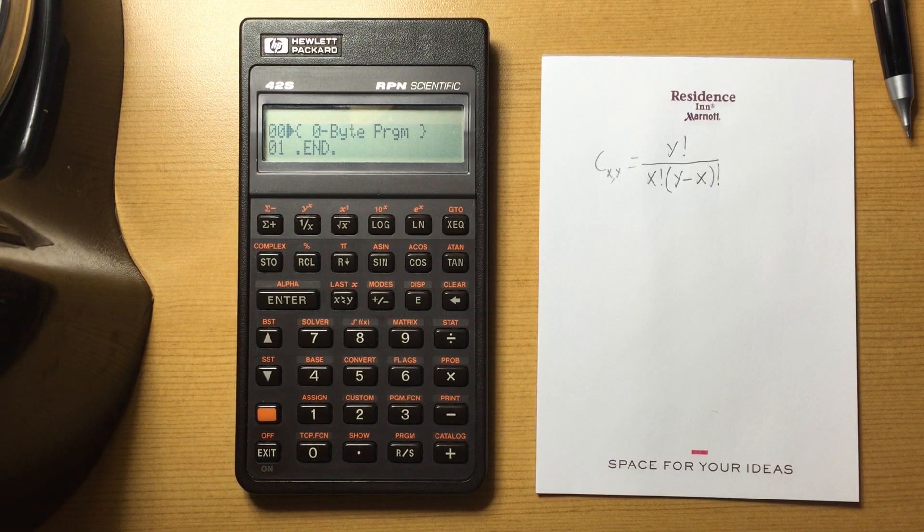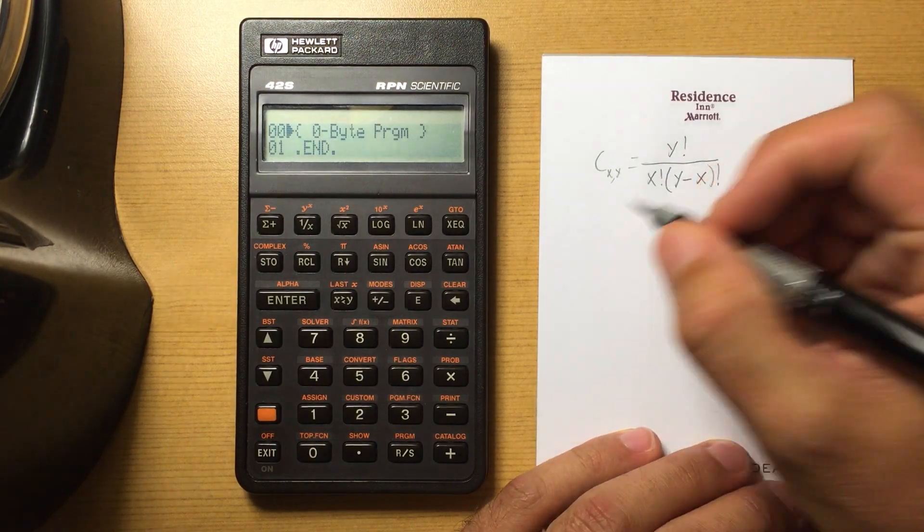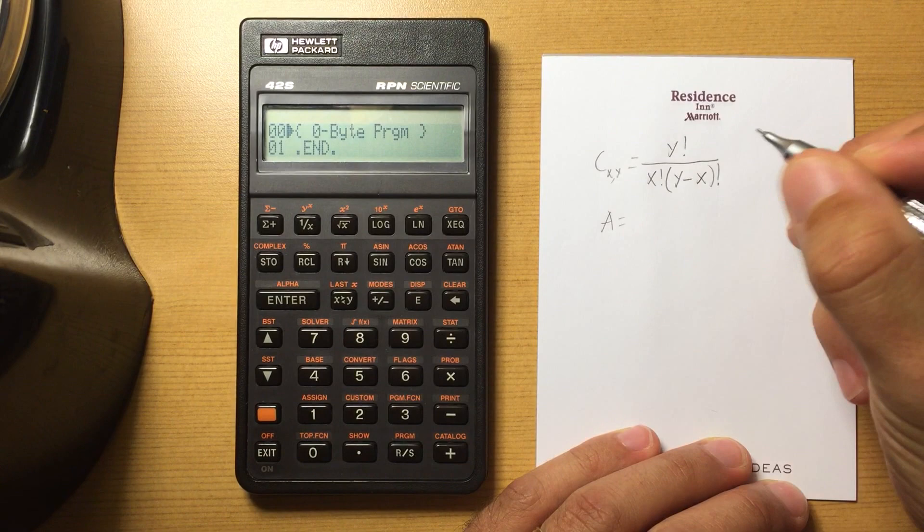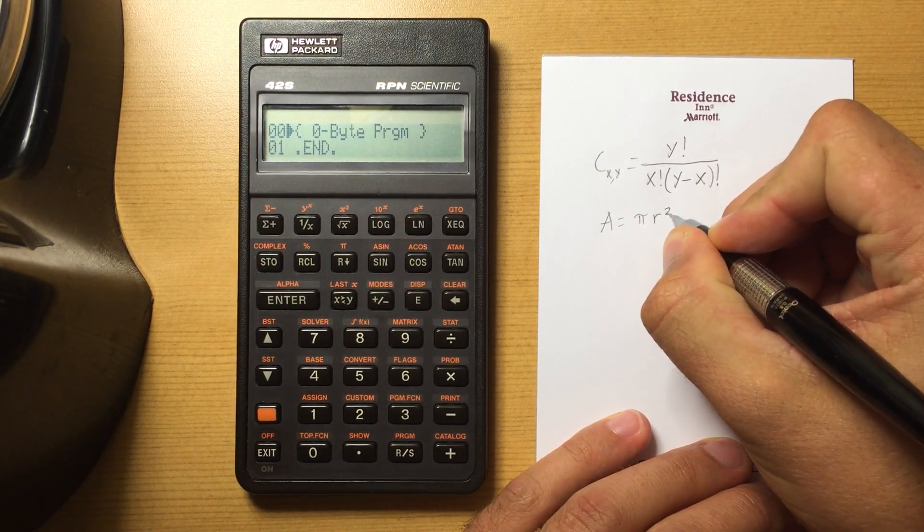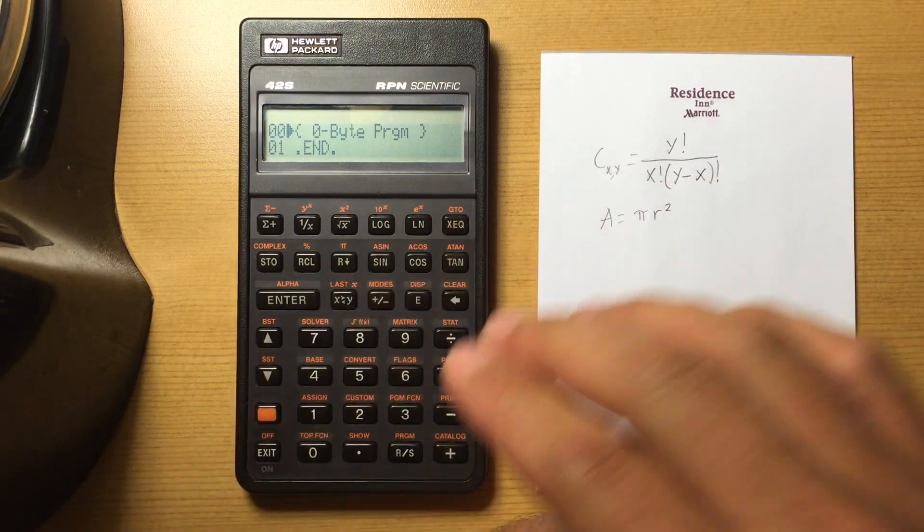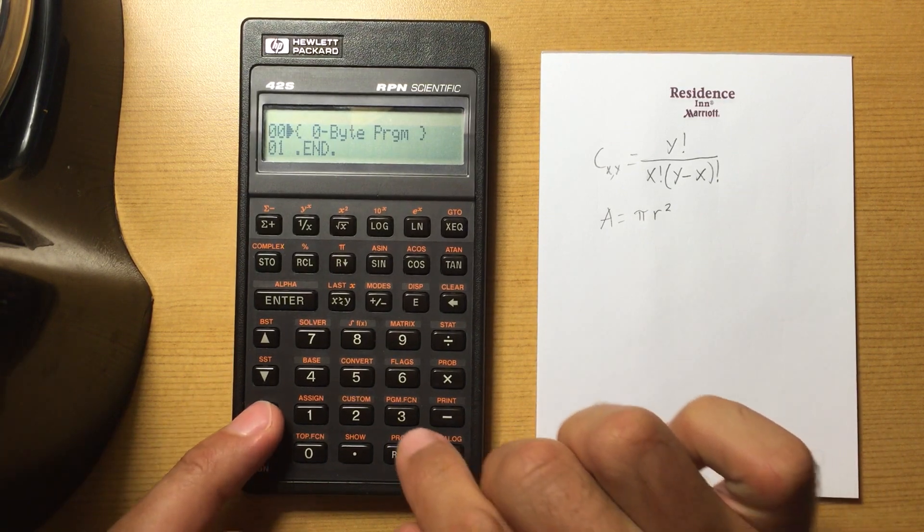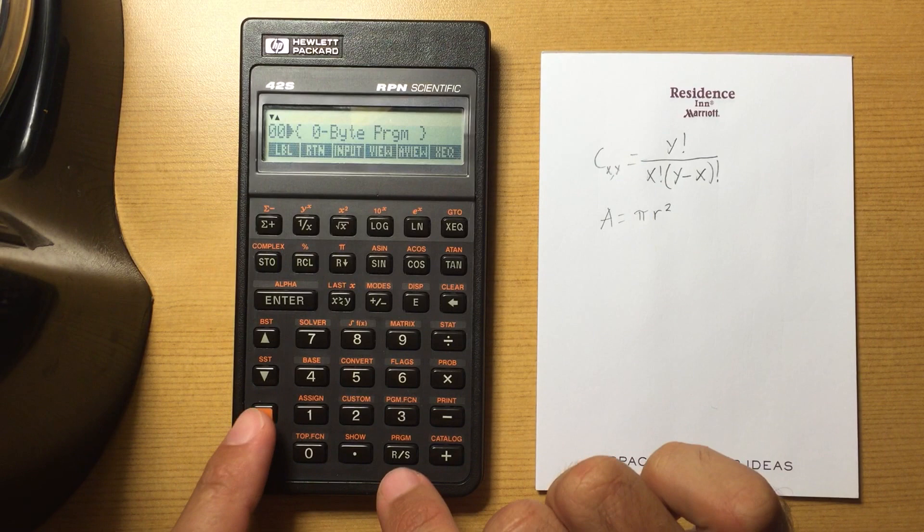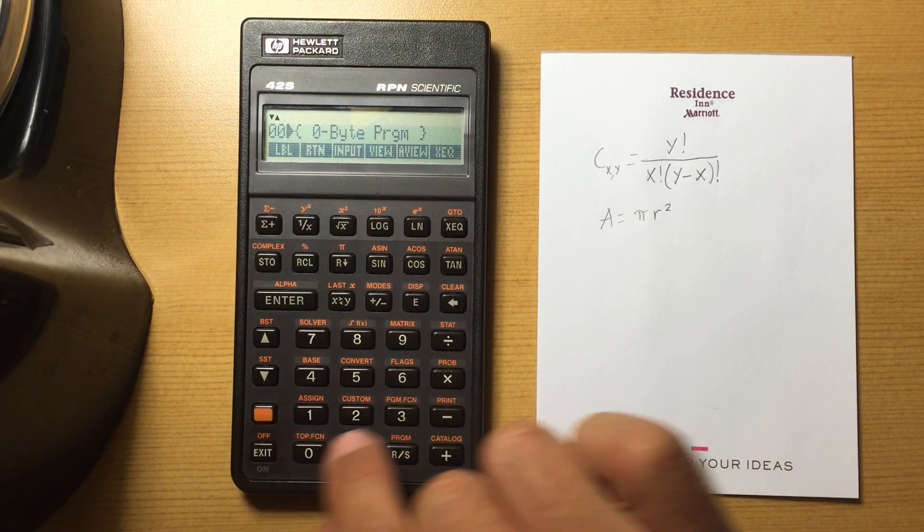So let's say I wanted to do a program, the classic example in the HP manuals, something that will calculate the area of a circle. So A is equal to pi r squared. I'm not going to try to be efficient here. I'm just going to run through this real quick. So I'm going to go to my program function, and I'm going to lock it. So I do it again. Shift program function, shift program function.